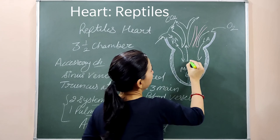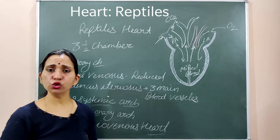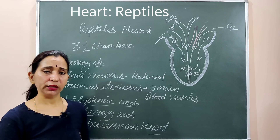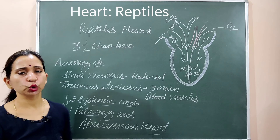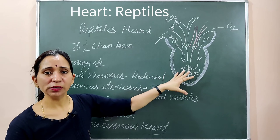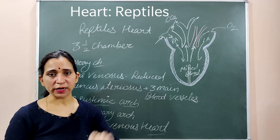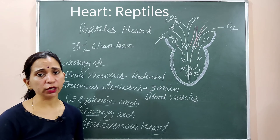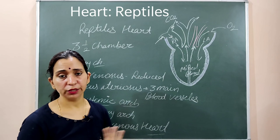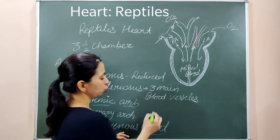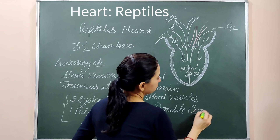The circulation in reptiles is also known as double circulation, as in amphibians. The blood is transported through the heart two times before being delivered to the body organs — once as oxygenated blood and once as deoxygenated blood — making it double circulation.